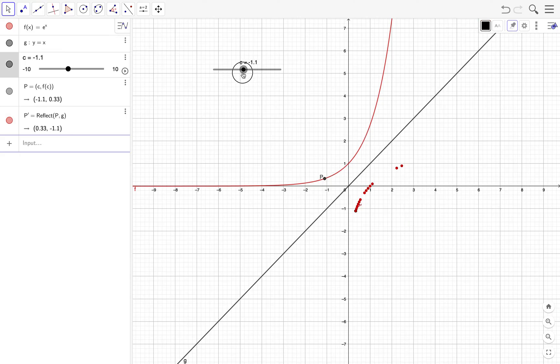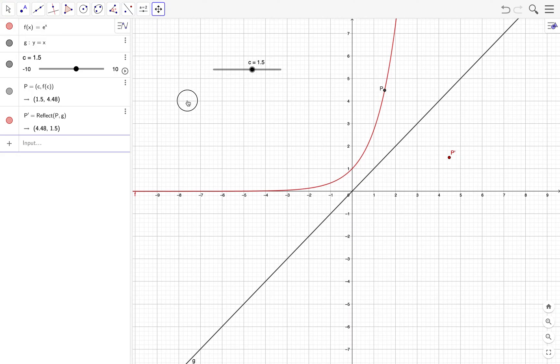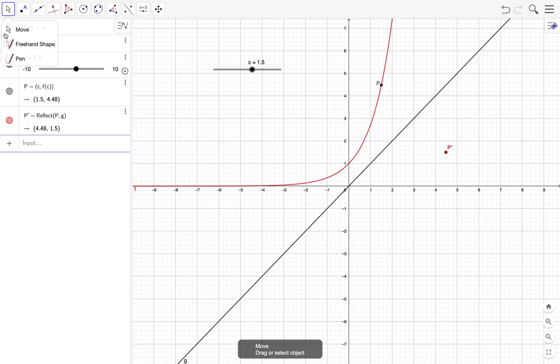Let's see what happens. So as you can see, the trace of P prime is shown on the graphics view. By the way, the trace can be easily erased by moving the graphics view.